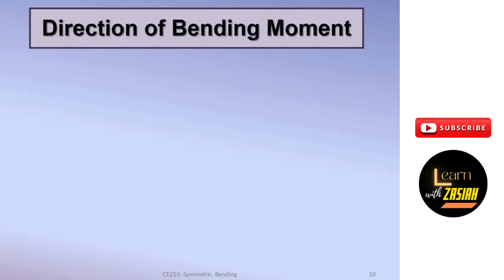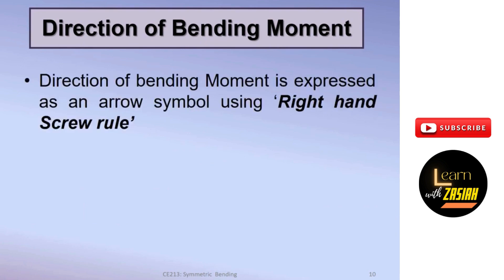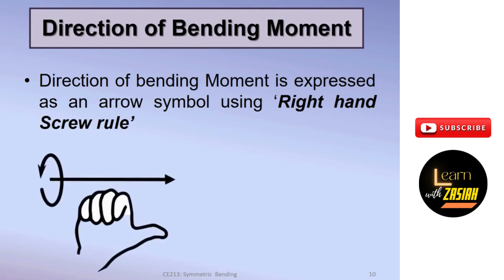Now I'm going to explain how to assign the direction of a bending moment. The direction of the bending moment is expressed as an arrow, simply using the right-hand screw rule. So according to the right-hand screw rule, you have to use your right hand, and this is how you will know the direction of the bending moment.